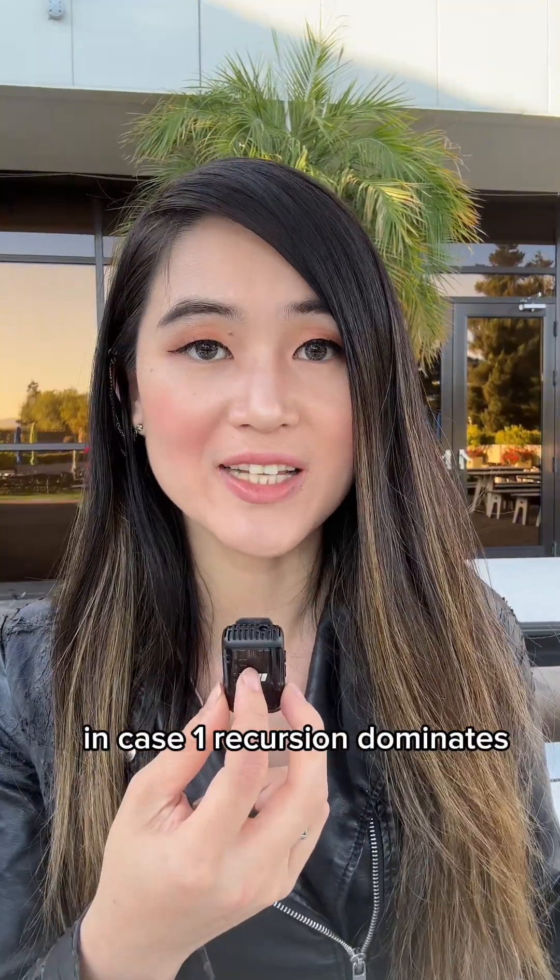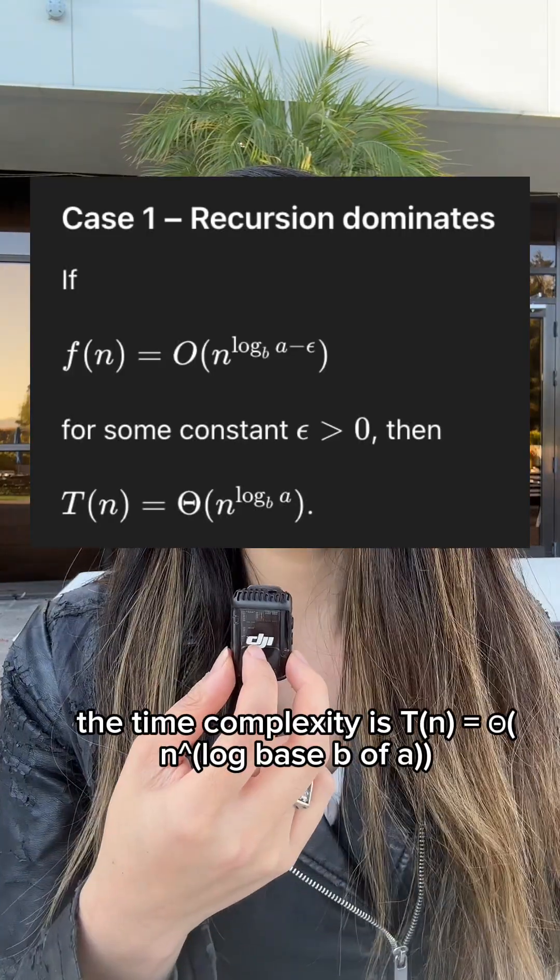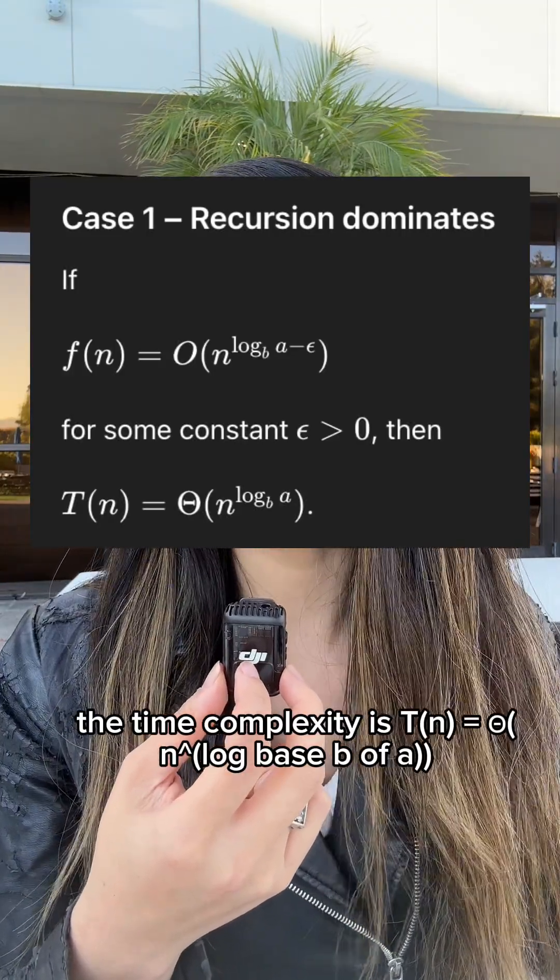In case one, recursion dominates. When f(n) grows slower than n to the power of log base b of a, then the time complexity is theta of n to the power of log base b of a.